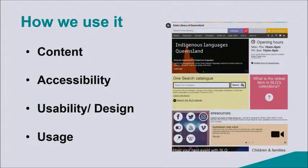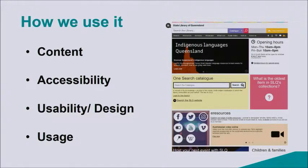So how do we use it? We utilize data to bring meaningful insights around four key areas. Content — is the information accurate? Is it relevant? Accessibility — is it easily accessible for people from all backgrounds? Usability or design — is the website well designed, is it easy to navigate through, is it easy to use? And usage — are people viewing my website, how are they interacting with it, and where are they coming from? These are just some of the questions that can be answered when evaluating a website.